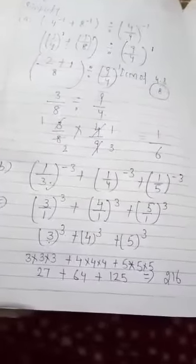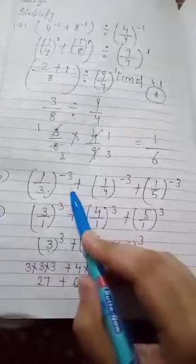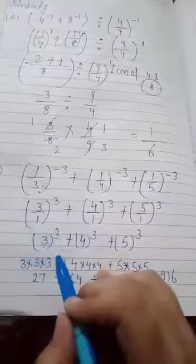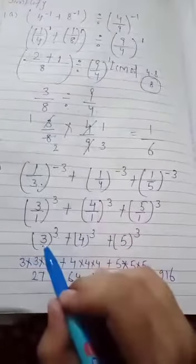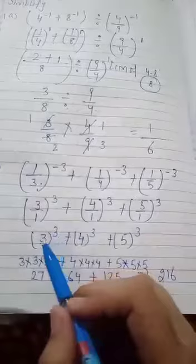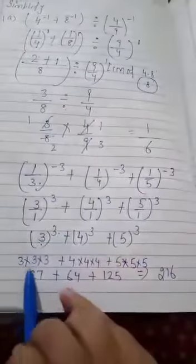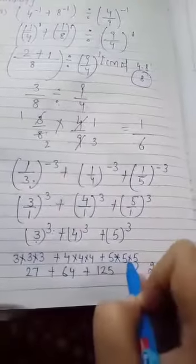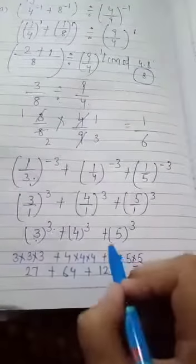How do we solve it? First, make the negative exponents positive. Then multiply the number by its power. 3 cube means 3 multiplied 3 times, same for 4 multiplied 3 times and 5 multiplied 3 times. In between there's an addition sign, then we do the addition.